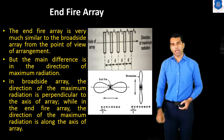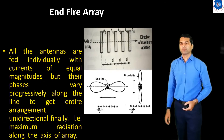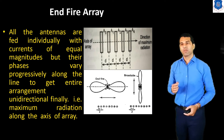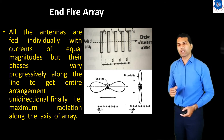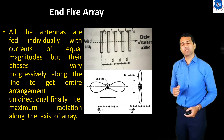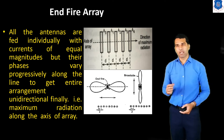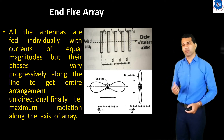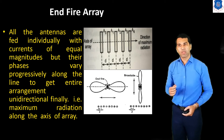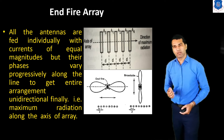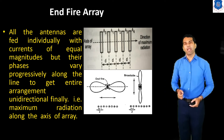In the endfire array, all the antennas are fed individually with a current of equal magnitude, but their phase varies progressively along the line to get the entire arrangement unidirectional — meaning maximum radiation along the axis of the array. In the broadside array, we give the current with equal magnitude and equal phase. But here, we change the phase of that current progressively along the line. This is the difference between the endfire array and the broadside array.